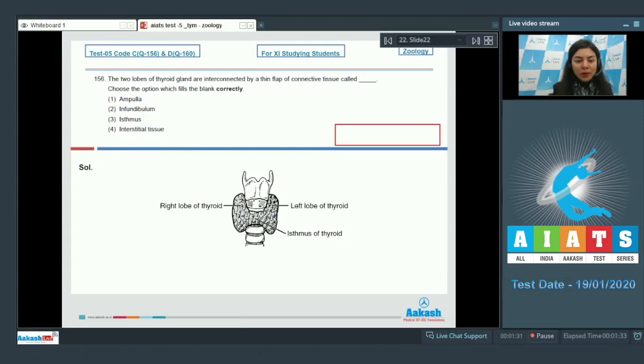The two wings or lobes of thyroid, that is right lobe and left lobe of thyroid, are located on either side of windpipe and they are joined together by a bridge of tissue called isthmus. So the correct answer here would be option number three, isthmus, whereas ampulla and infundibulum are parts of female reproductive tract, whereas interstitial tissue is the term used for loose connective tissue present between cells or group of cells or follicles. The correct answer is option three, isthmus.